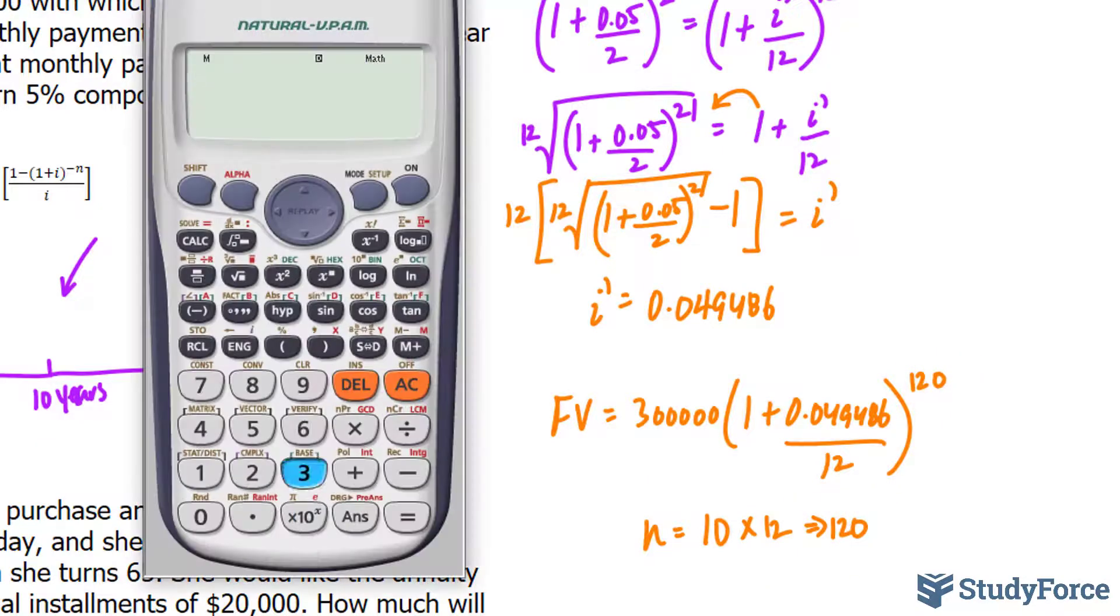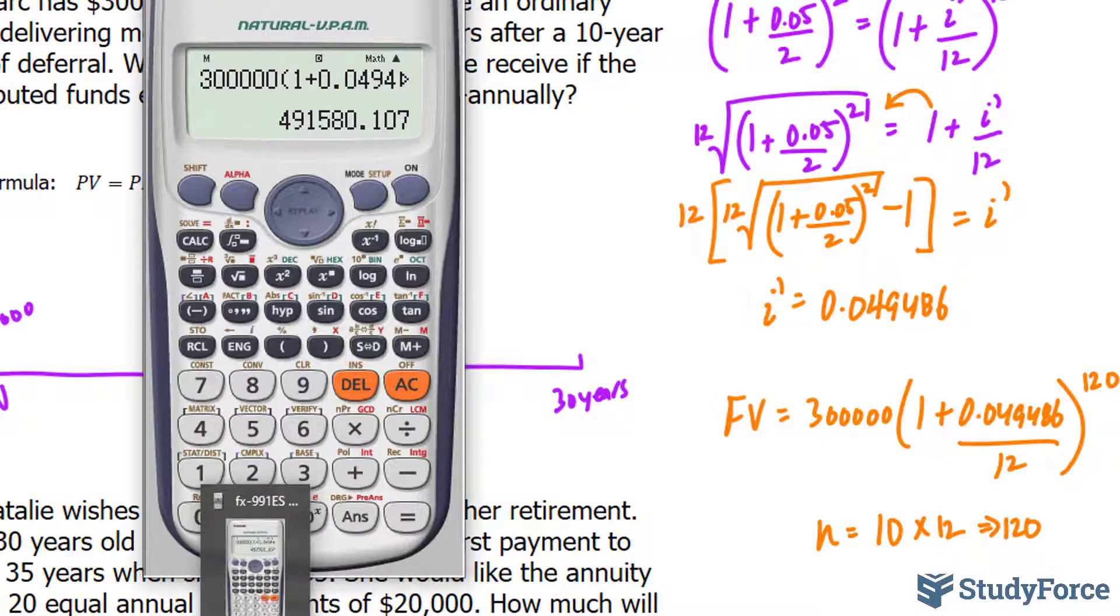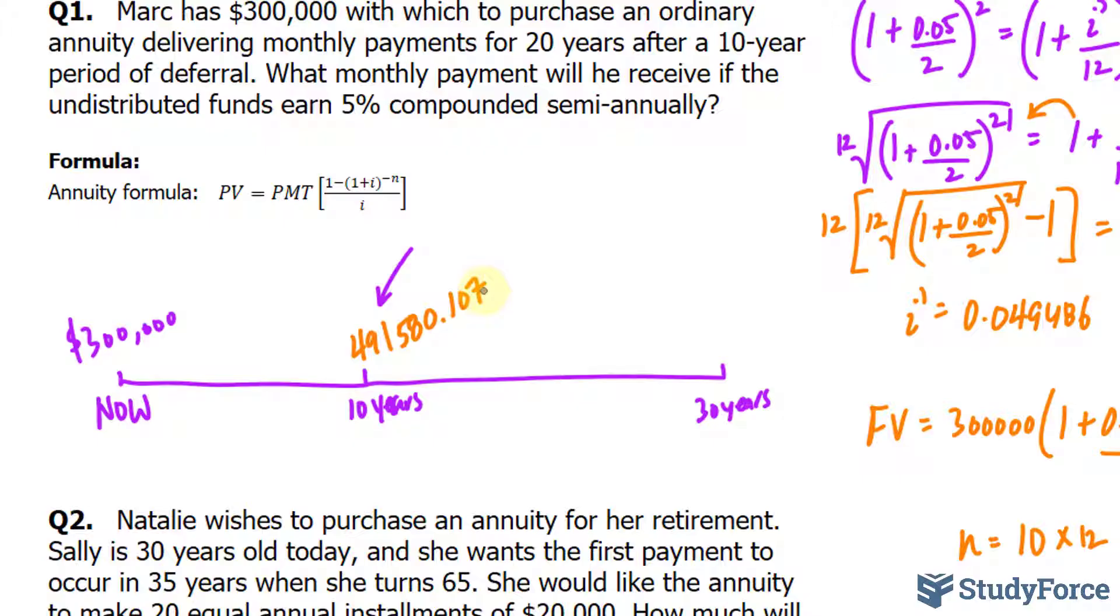Let's calculate this. 300,000 multiplied to 1 plus 0.049486 divided by 12, raised to the power of 120. And so, the future value 10 years from today, given our interest rate that we just calculated, is 491580.107. And you want to keep all the decimal places. You don't want to round early.